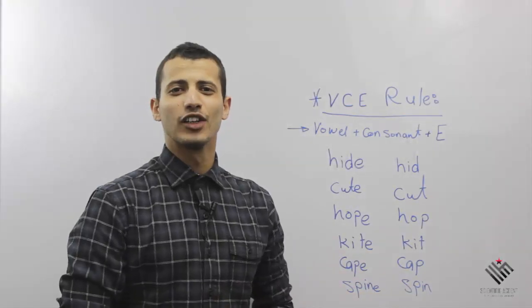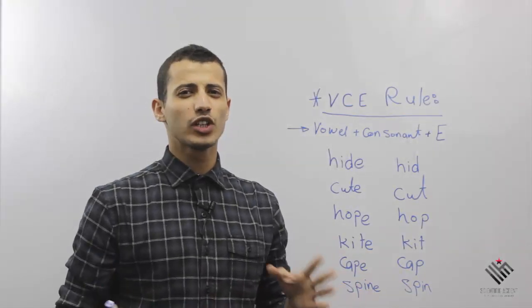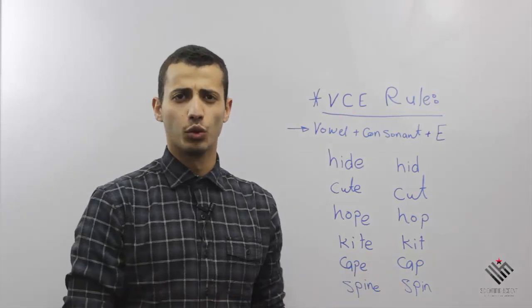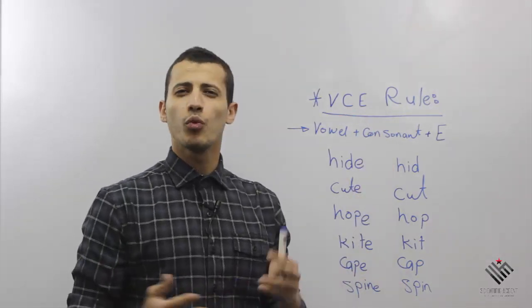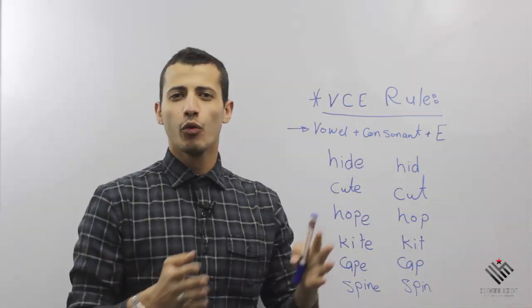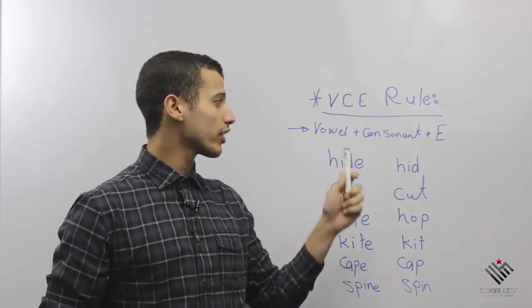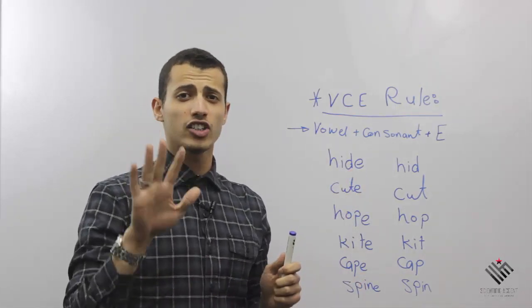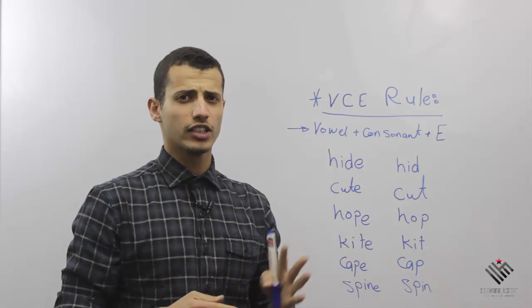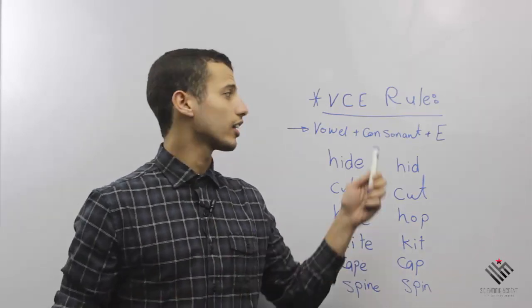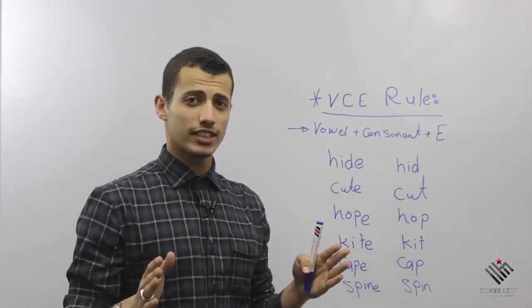Hi guys, this is Abdullah from Scientific Accent, and today we're going to talk about the VCE rule. So what's the VCE rule? Well, whenever you see a word that ends with a vowel—you know the vowels, five letters: A, E, I, O, and U—and any other letter is a consonant.